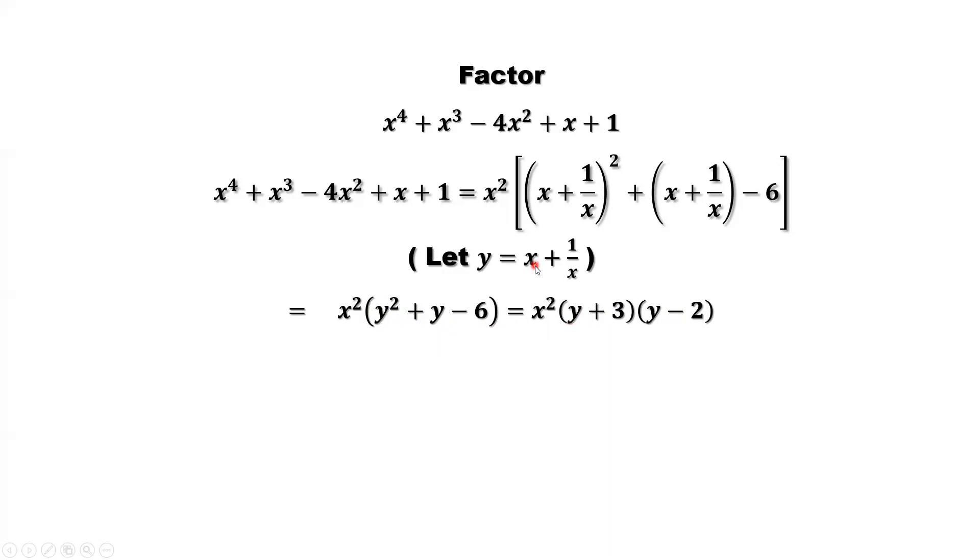So what is y? We define x plus 1 over x. Replace y back by x plus 1 over x. Plug in here. Plug in here. So we want to get rid of the denominator x. So here you have x squared outside. x squared equals x times x. Give one x to this factor, give another x to the second factor. So x times x is x squared, x times 1 over x is 1, x times 3 is 3x. You have another x here: x times x is x squared, x times 1 over x is 1, x times negative 2 is negative 2x.